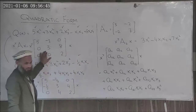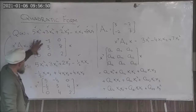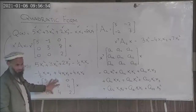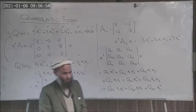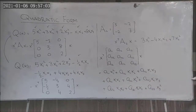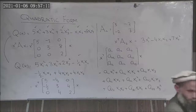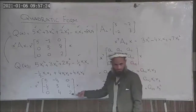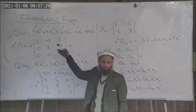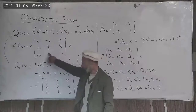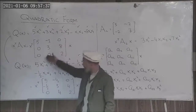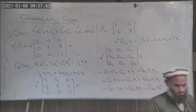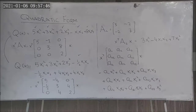For a given quadratic expression, one can obtain a non-symmetric matrix A or a symmetric matrix A — both are valid representations. However, we always prefer symmetric matrices because they are relatively easier to handle. For non-symmetric matrices there are many possibilities; for example, the off-diagonal entry of 8 could be split as 6 and 2. For symmetric matrices, there is a unique representation.